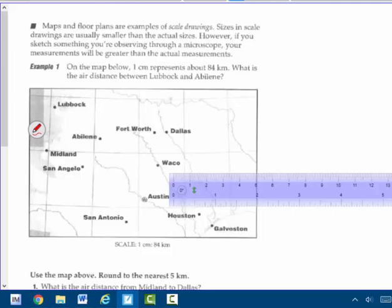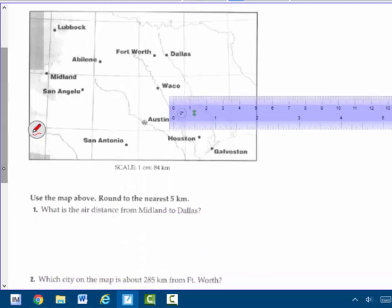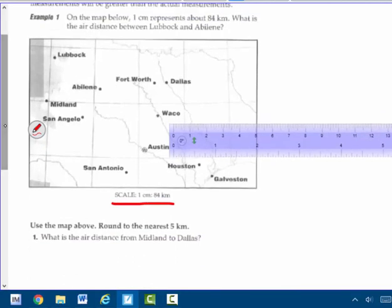However, if you sketch something that you're observing in a microscope, that thing's really tiny. If you want to draw it out, your measurements will be greater than the actual measurement. We have a map sitting here in front of us, example one. On the map below, one centimeter, here's the scale right here, one centimeter is equal to 84 kilometers.